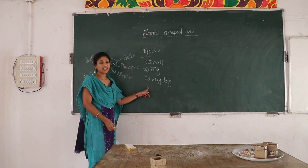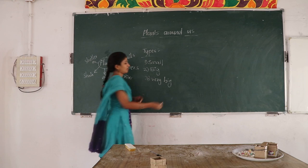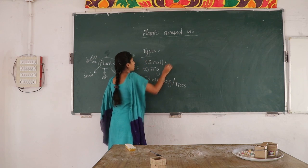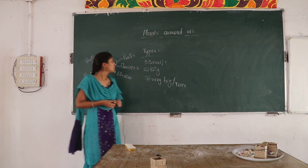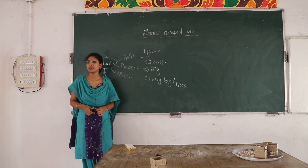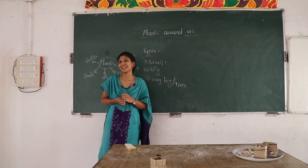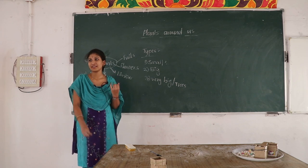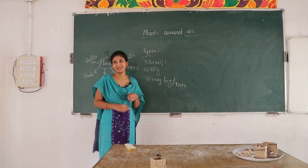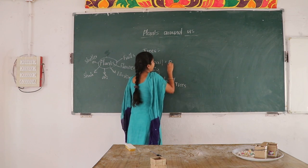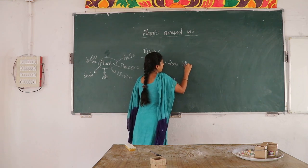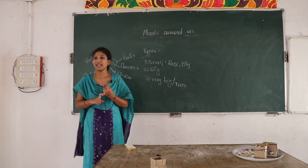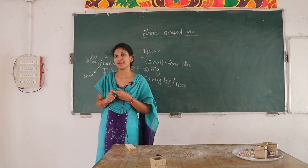Very big plants with a strong trunk are called trees. Do you know what are the small plants? Rose, lily, marigold. Small plants are rose, lily, aloe vera, etc.